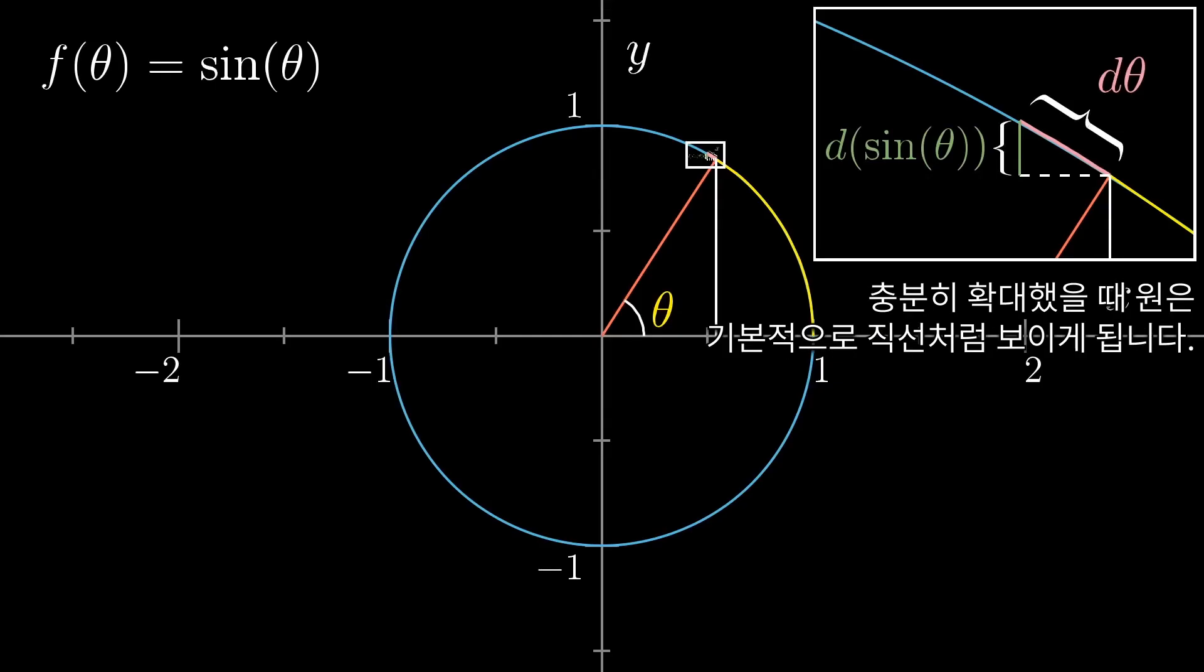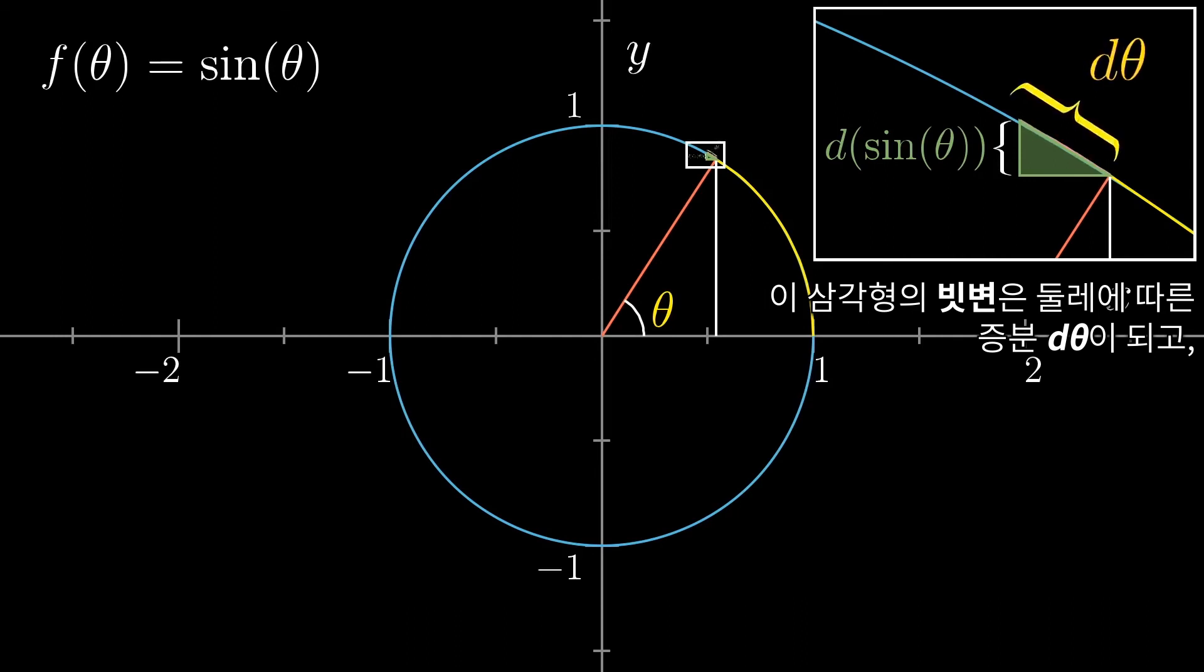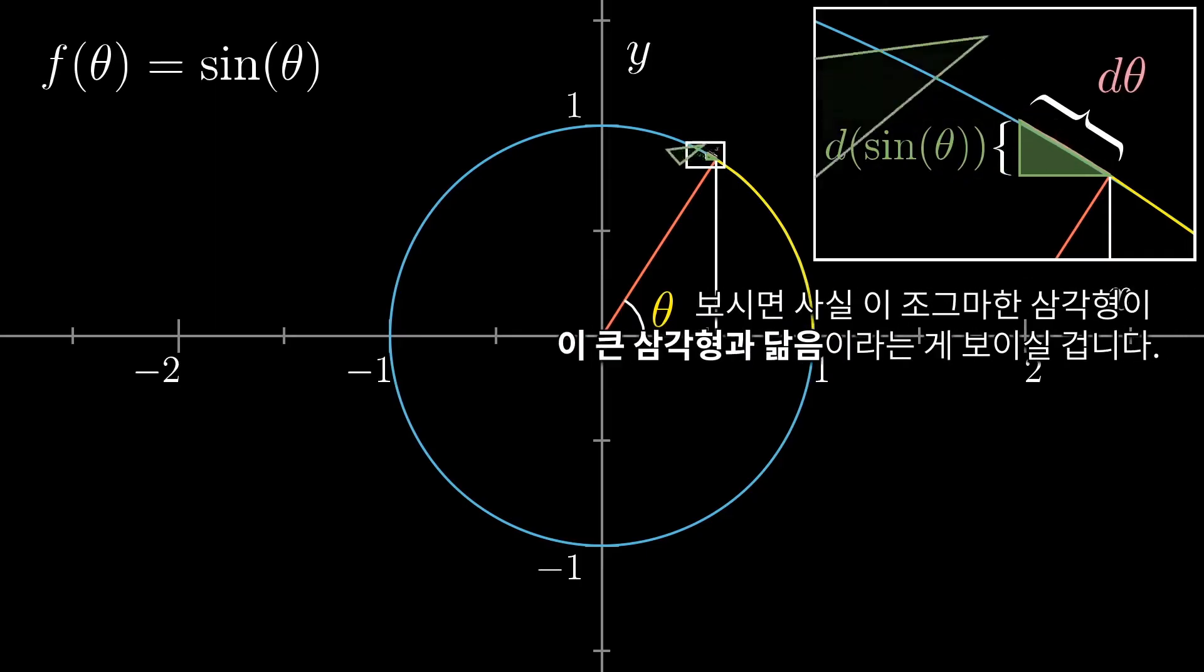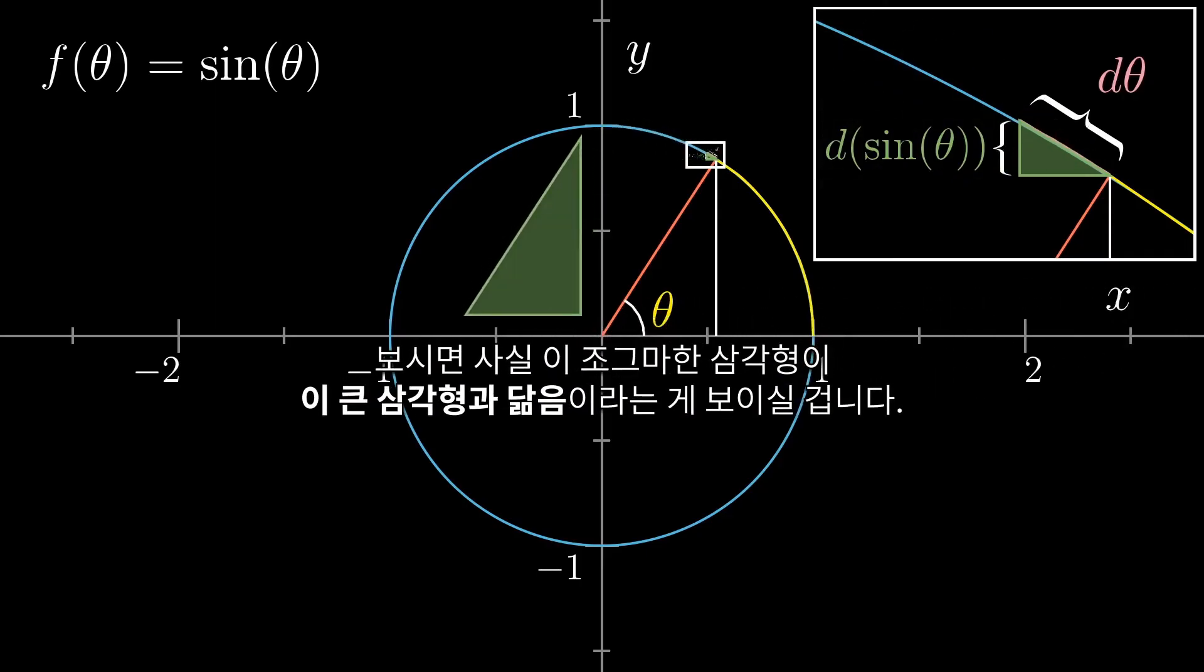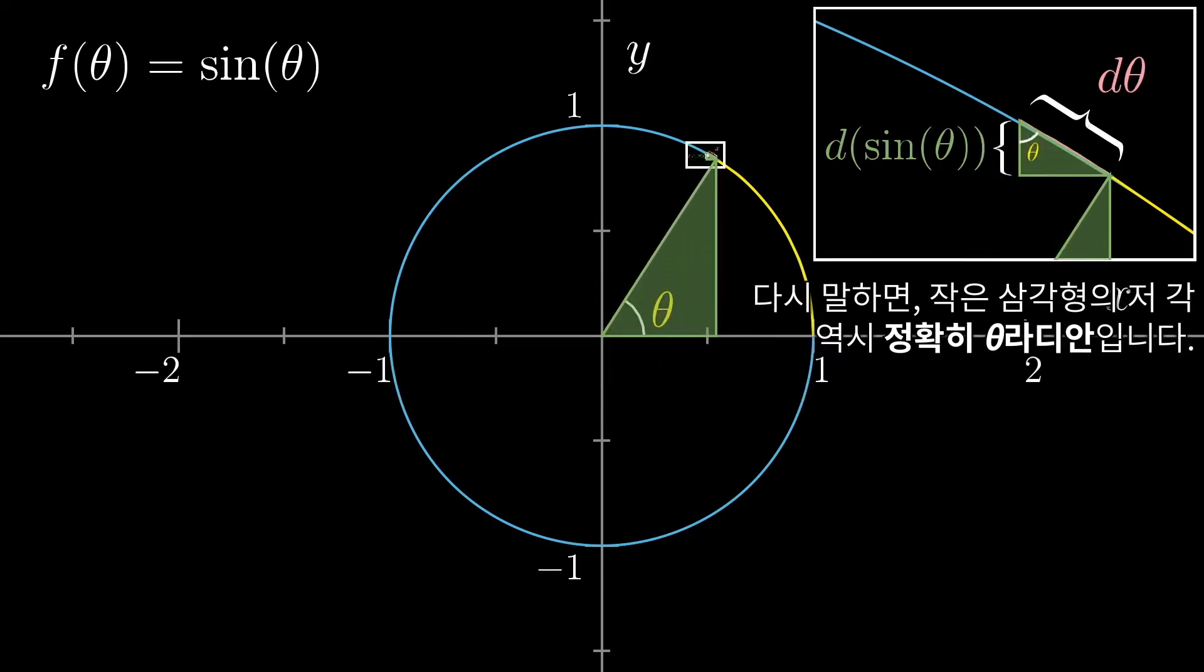Well, zoomed in close enough, the circle basically looks like a straight line in this neighborhood. So let's go ahead and think of this right triangle, where the hypotenuse of that right triangle represents the nudge d theta along their circumference. And that left side here represents the change in height, the resulting d sine of theta. Now this tiny triangle is actually similar to this larger triangle here, with the defining angle theta, and whose hypotenuse is the radius of the circle with length 1. Specifically, this little angle right here is precisely equal to theta radians.